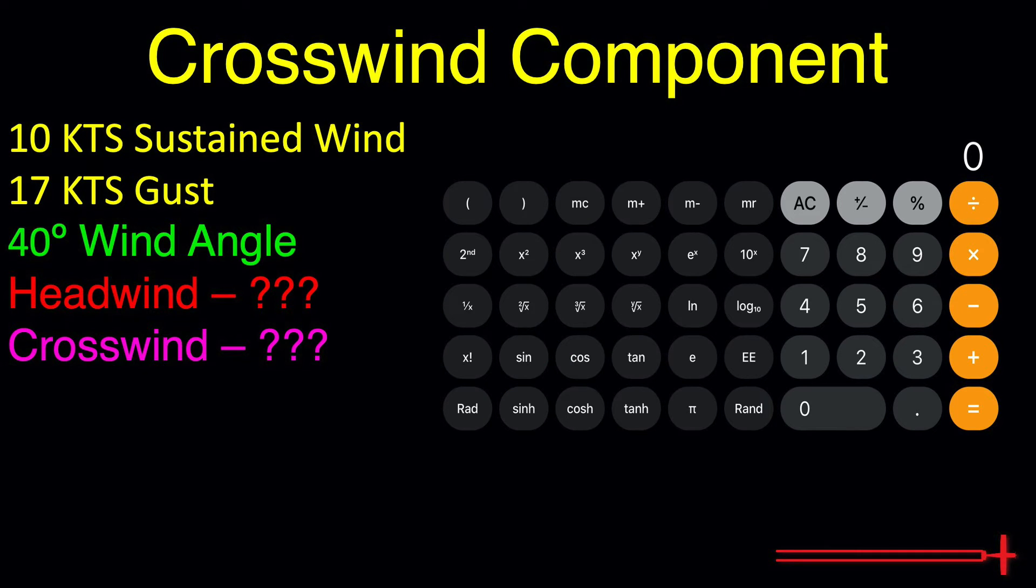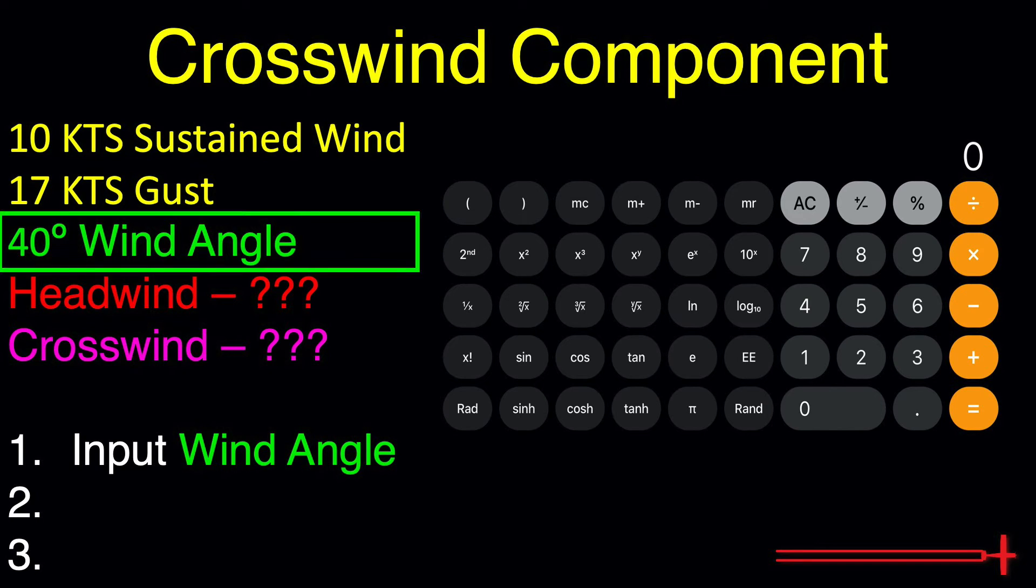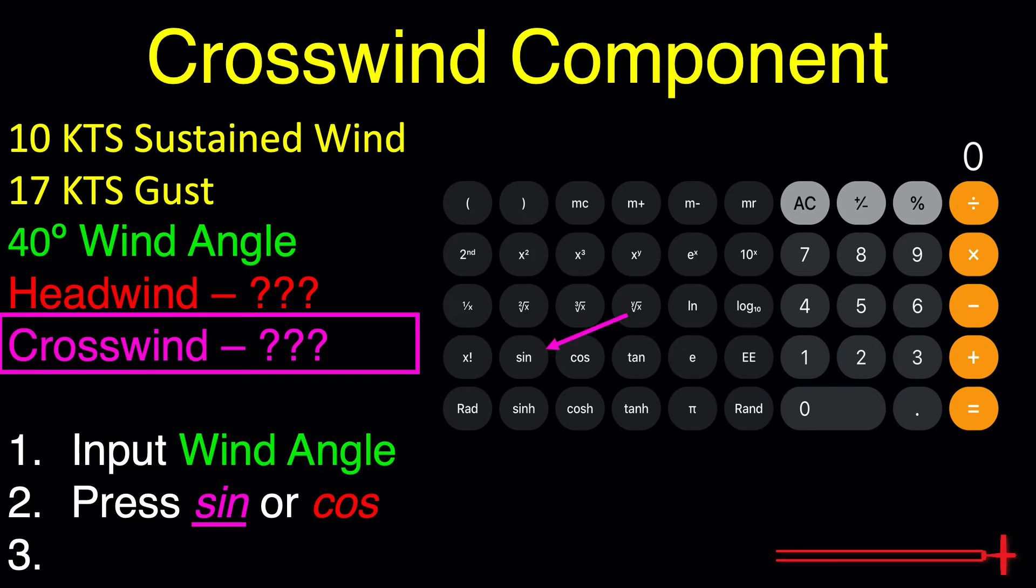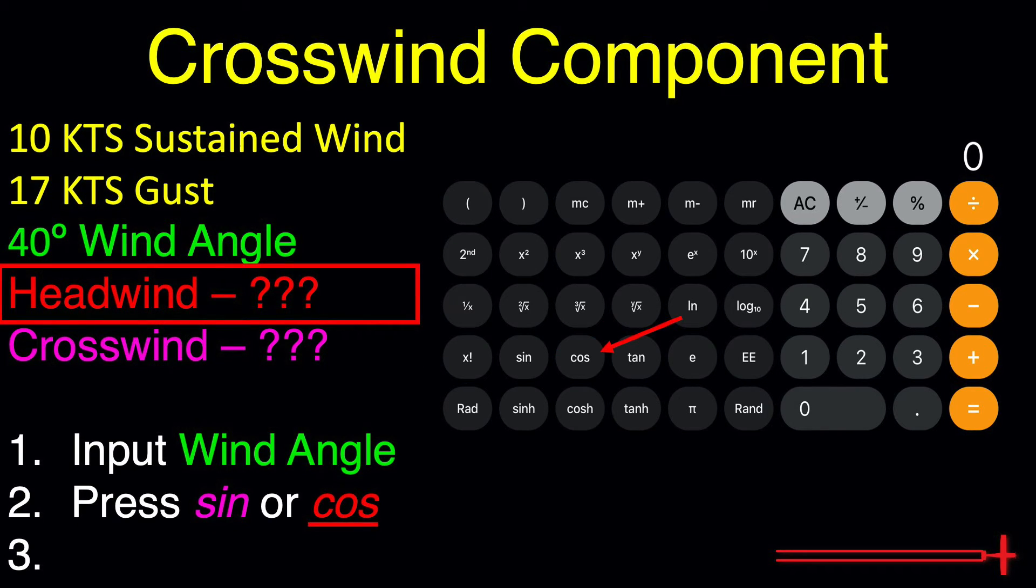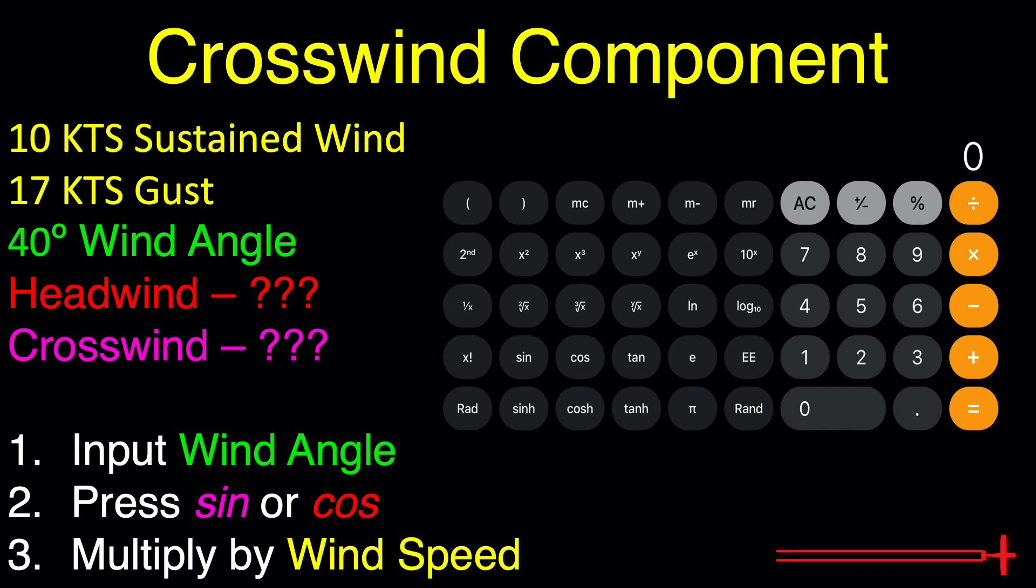If you ever forget which mode you need to be in, just remember that wind is reported in degrees, not radians. Now, once that RAD no longer appears in the top left corner, we'll follow three simple steps to find our crosswind or headwind component. Step one, input the wind angle, in this case 40 degrees. Step two, press sine or SIN if finding crosswind, and cosine or COS if finding headwind. And step three, multiply that value by our wind speed, either 10 or 17 knots in this case.